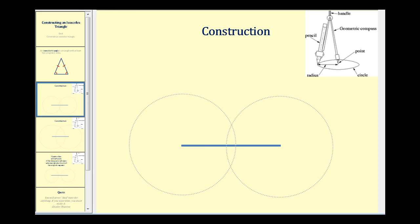If you're given a specific length for the remaining two sides of an isosceles triangle, you can mark that length with your compass. So if we put the point of the compass on one end point and the pencil of the compass past the midpoint, we're going to swing an arc above the segment. It might look something like this.